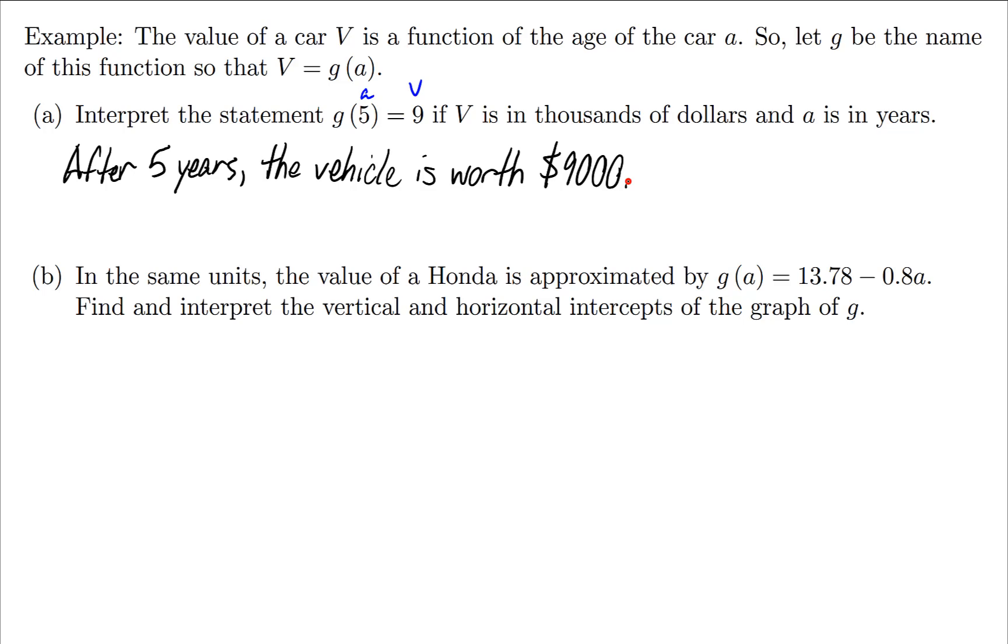Now let's look at another function like this. The value of a Honda is approximated by g(a) = 13.78 - 0.8a. We want to find the vertical and horizontal intercepts of this graph. For the vertical, that means we need to set the independent variable a equal to zero. So I'll just calculate g(0). That's 13.78 - 0.8(0), which equals 13.78.